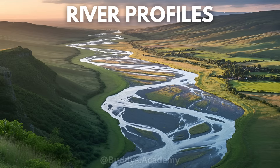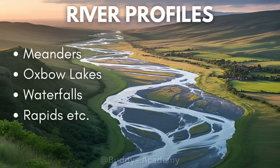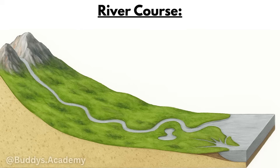Just to refresh your memory, fluvial landforms will be things like your meanders, your oxbow lakes, your waterfalls and also your rapids. So this is what a typical course of a river will look like, and we know that a river is going to flow from your high ground to your low ground, and that's because of gravity.